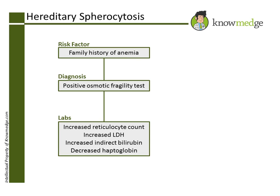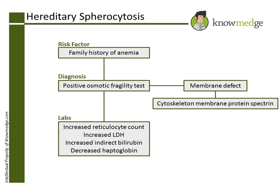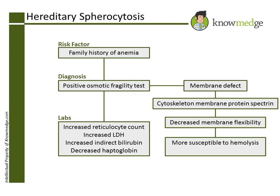Choice C, membrane defect, is the correct answer, describing hereditary spherocytosis. There is a problem in the cytoskeleton membrane protein spectrin that causes membrane flexibility to decrease. Therefore, it becomes more susceptible to hemolysis. The spherocytes can also result in gallstone development.